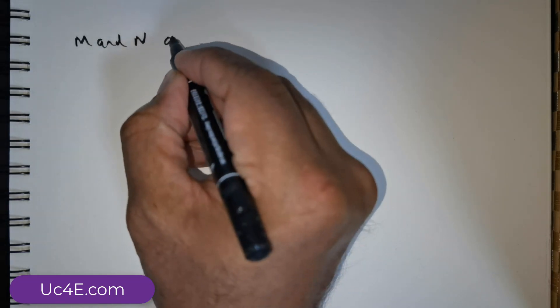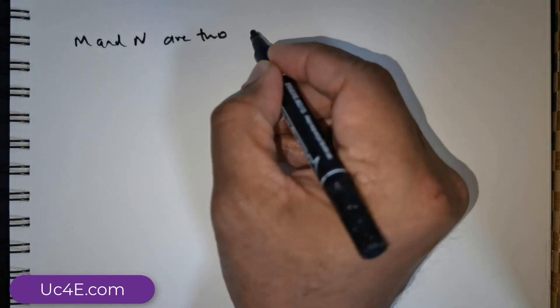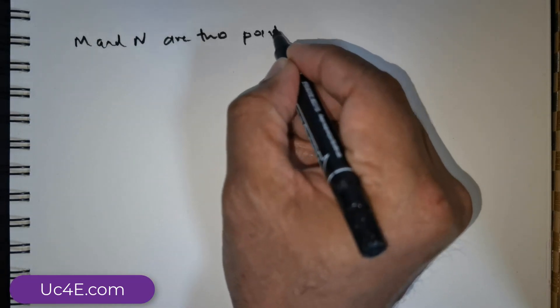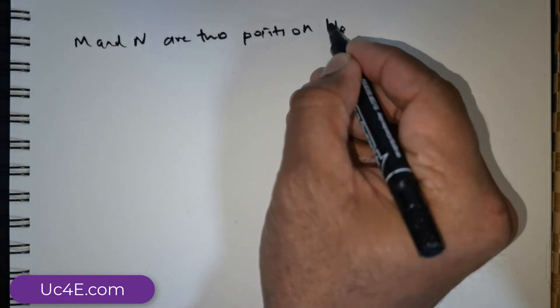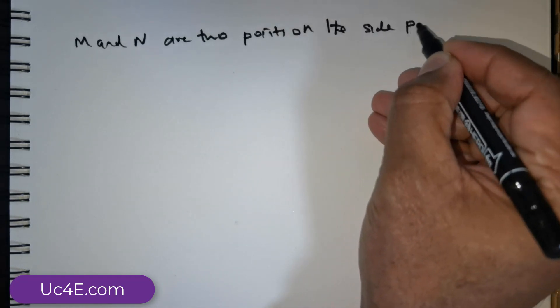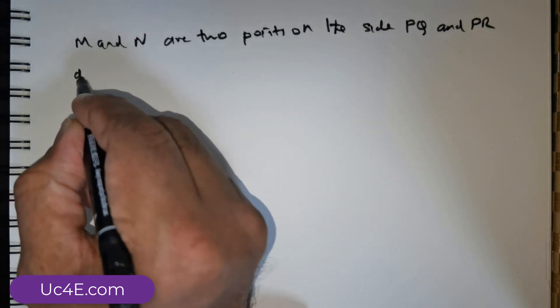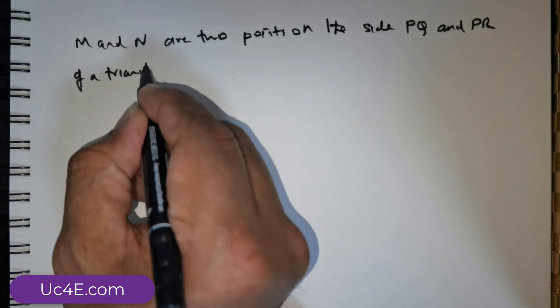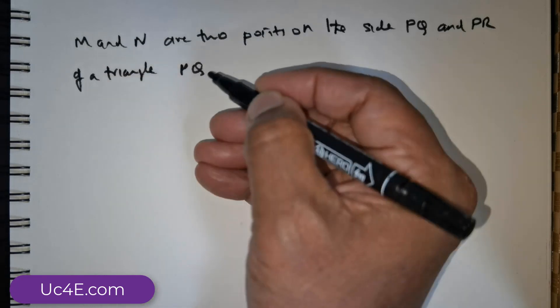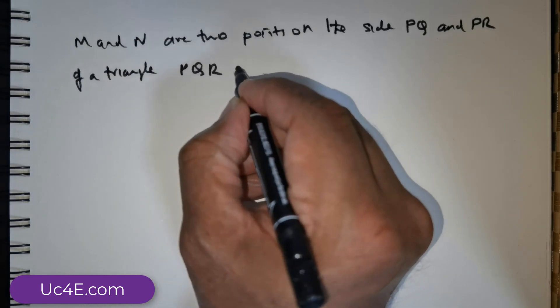M and N are two points on the side PQ and PR of a triangle PQR respectively.